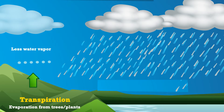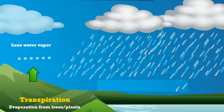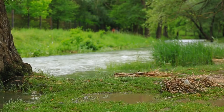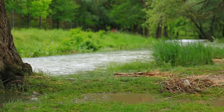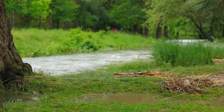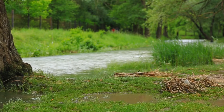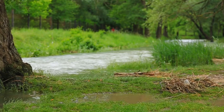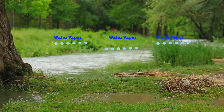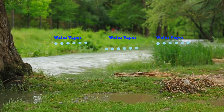No trees, less plants — this removes the transpiration process. Also, there are fewer roots and soil on the surface to hold water, meaning less water is evaporated.